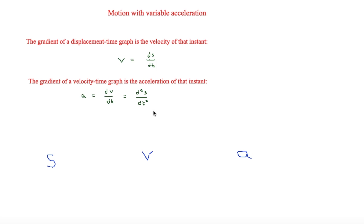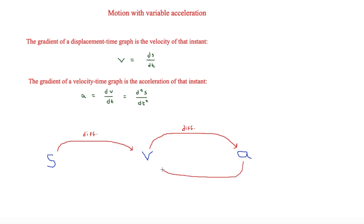A more general way to put it: if we have s, v, and a, then s differentiates to give v, and v differentiates to give a. On the other hand, a integrates to give v, and v integrates to give s.